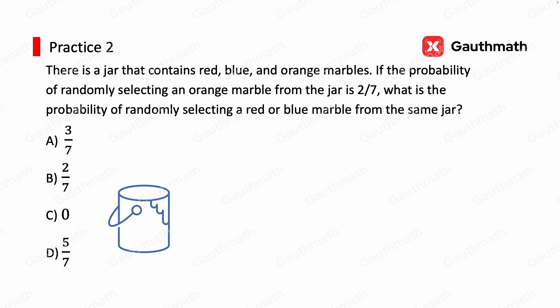Practice 2. There is a jar that contains red, blue, and orange marbles. If the probability of randomly selecting an orange marble from the jar is 2 over 7, what is the probability of randomly selecting a red or blue marble from the same jar?